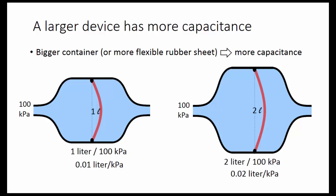A bigger container has more capacitance. For example, this capacitor stores twice as much water with the same pressure. So it has twice the capacitance, 0.02 instead of 0.01 liter per kilopascal.